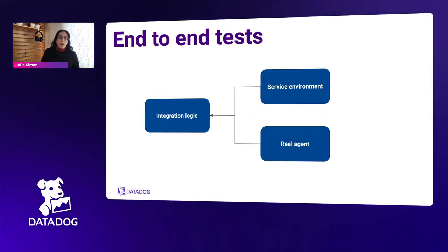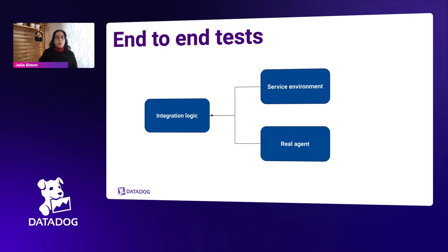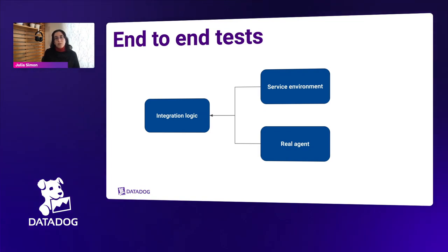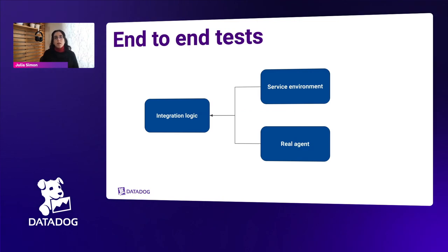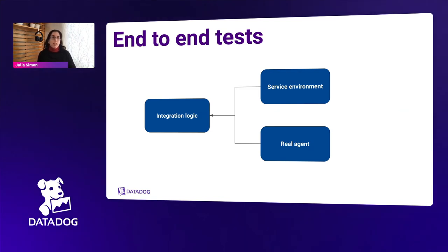Finally, we have end-to-end tests, and now there is no mocking. You're running your integration inside a real agent in a Docker container against a real service. The reason we do this is because integrations run as Python code inside a Go agent, and sometimes the interaction there can be strange. So it's important that we run the real thing to make sure everything works as expected.